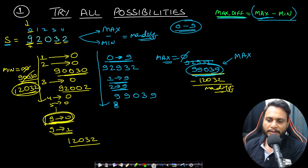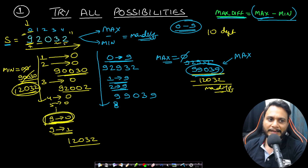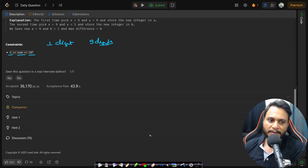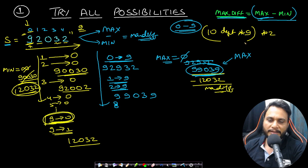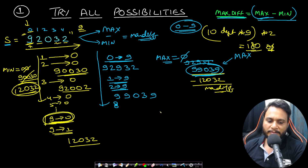In this approach, we iterate over 10 digits and over the entire string length (maximum 9 characters). This is done twice — once for max, once for min — giving approximately 180 operations, which easily runs within one second. This is the simplest possible approach.